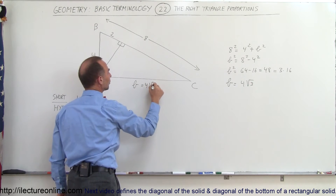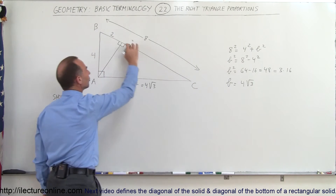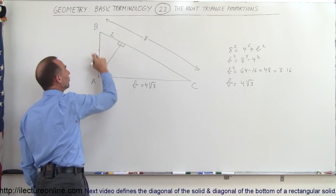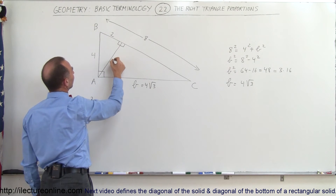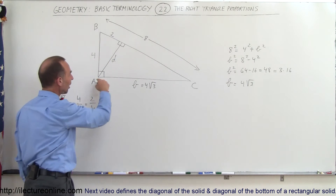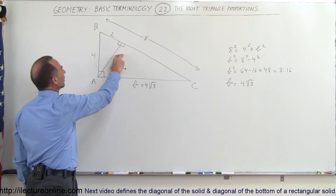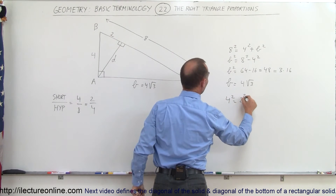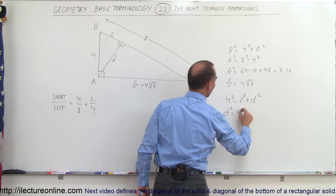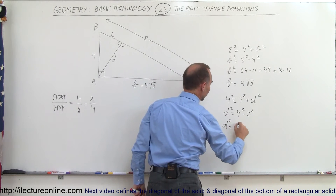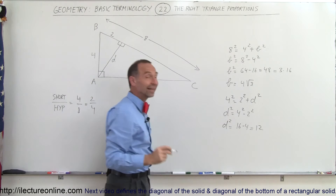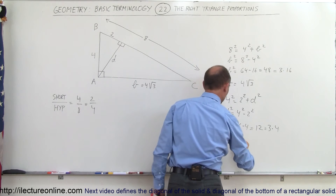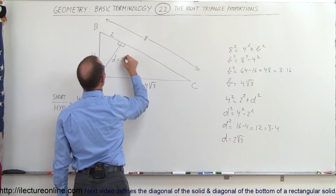Side B, equal to 4 times the square root of 3, is the hypotenuse of this triangle. The short side is right here, so we need to find the length of the short side. If we take this triangle, this is the hypotenuse, and let's call this side D. So how long is side D? D here is the longer of the two sides. We can say that 4 squared is equal to 2 squared plus D squared, or D squared is equal to 4 squared minus 2 squared, which means D squared is equal to 16 minus 4, which equals 12. That can be written as 3 times 4, so D, taking the square root, is equal to 2 times the square root of 3.